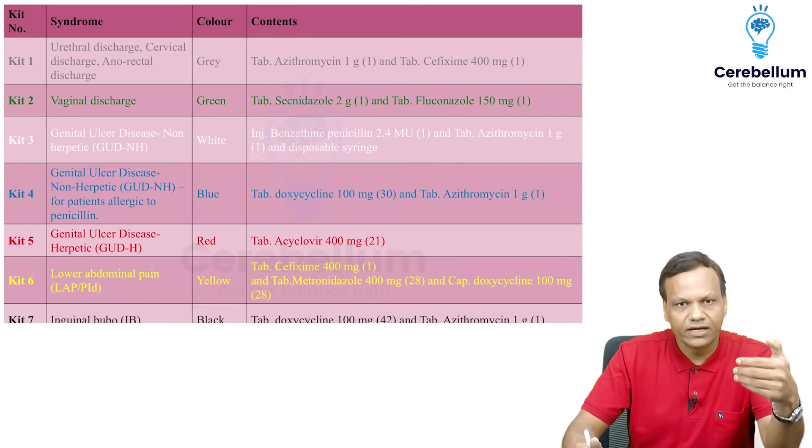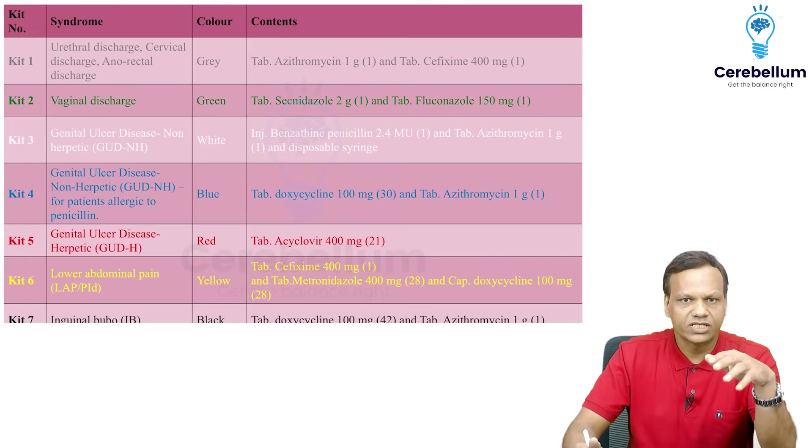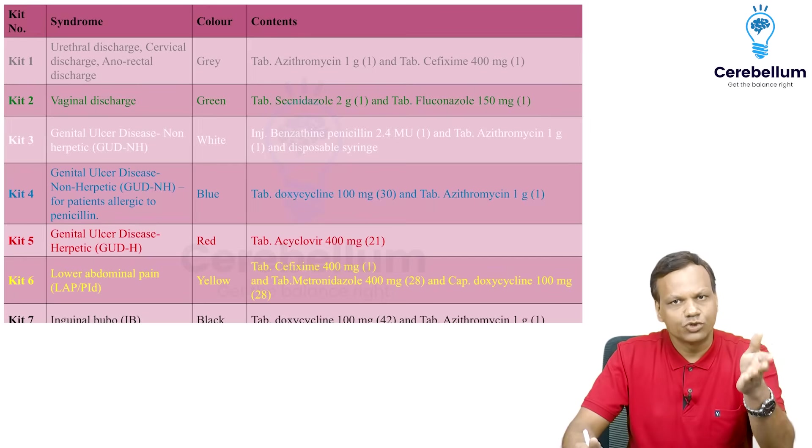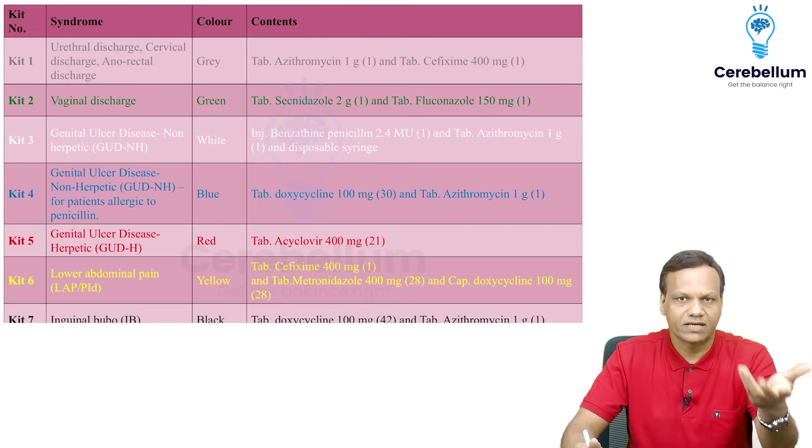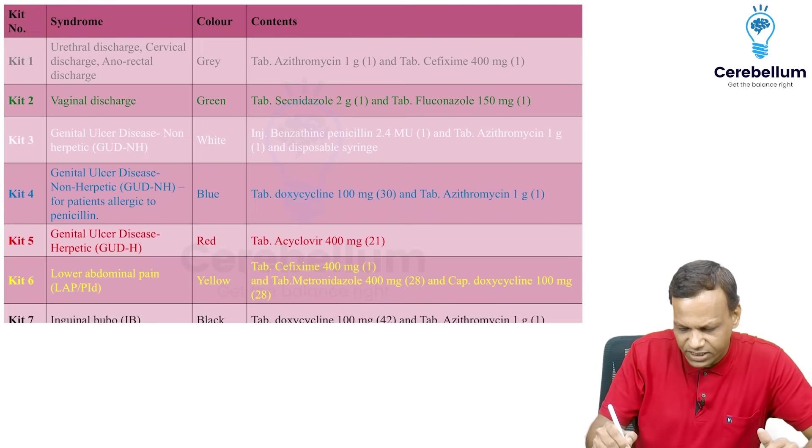Kit 1 is gray, kit 2 is green, kit 3 is white, 4 is blue, 5 is red, 6 is yellow, 7 is black. Now how will you remember which kit is for which color and used for what purpose and what drugs are present in that. So let's see how to remember that. It's very easy.